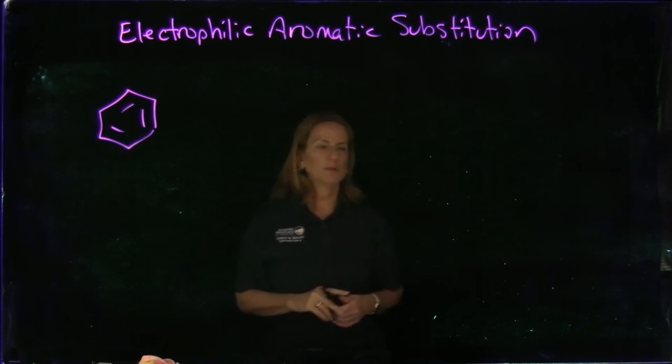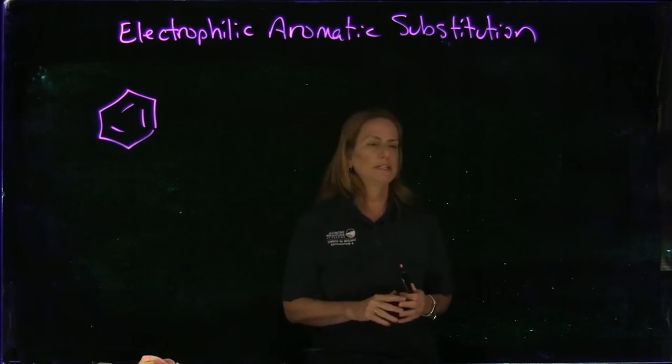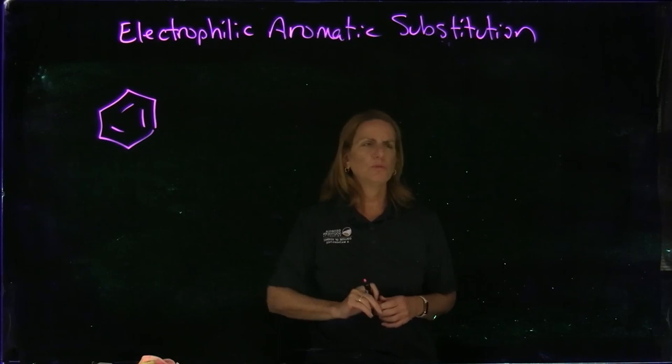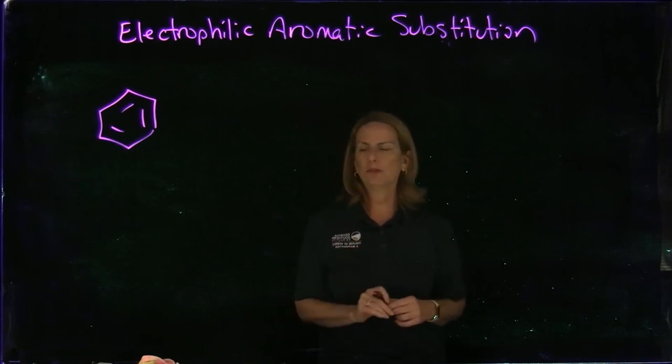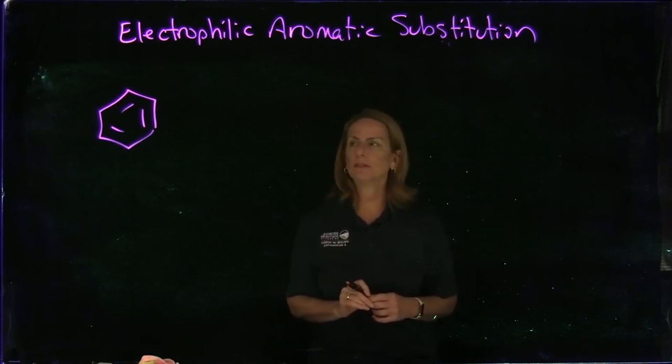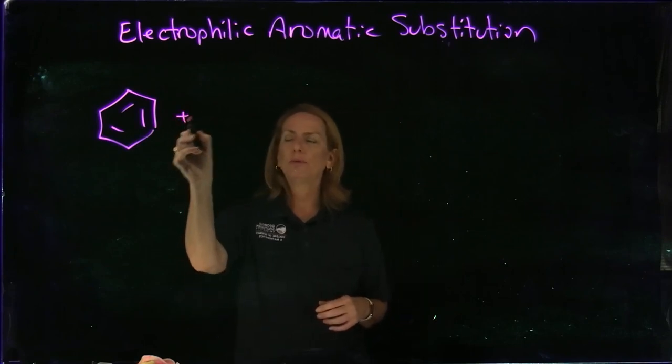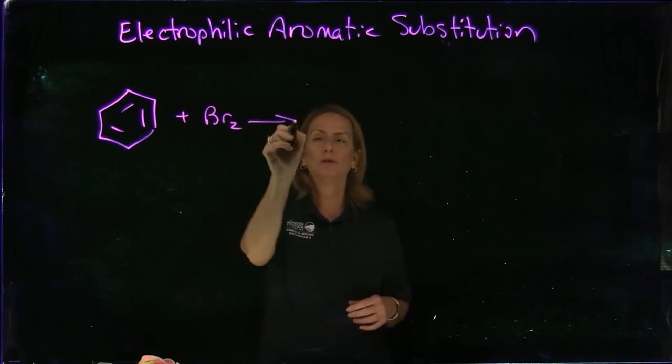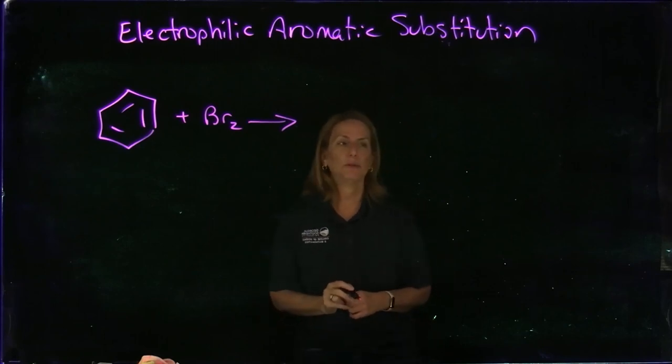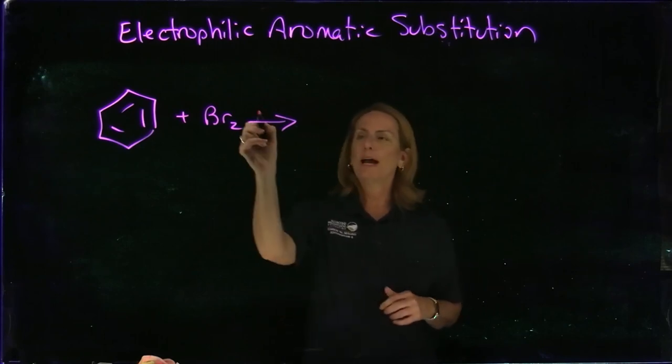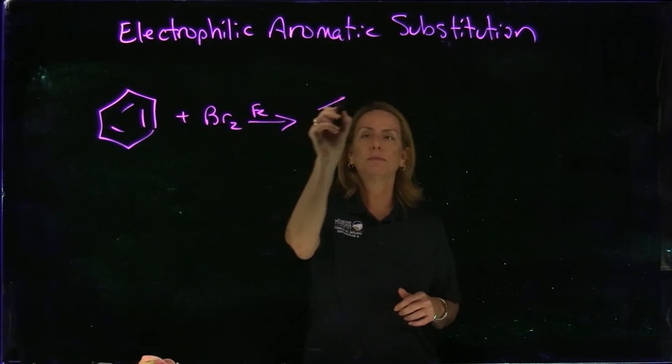We have seen that there's something special about aromatic compounds—they're very stable and don't do many reactions. But we're going to look at five important reactions that benzenes do. If we simply added bromine to benzene, it is too stable and would not react. But if we added a Lewis acid catalyst, we would replace one of the hydrogens on the benzene ring with bromine.